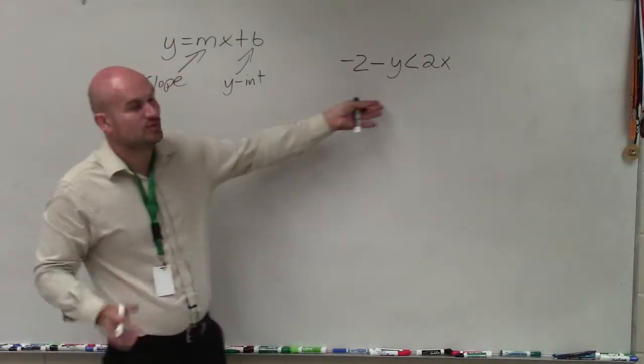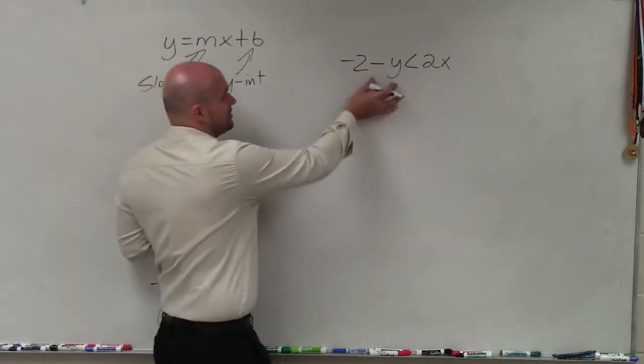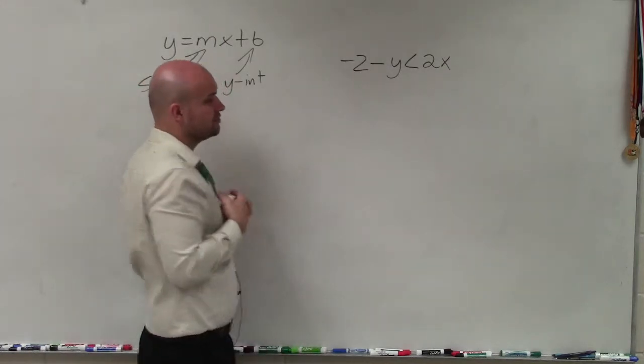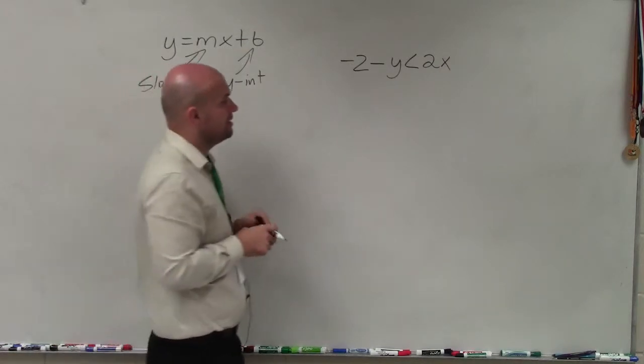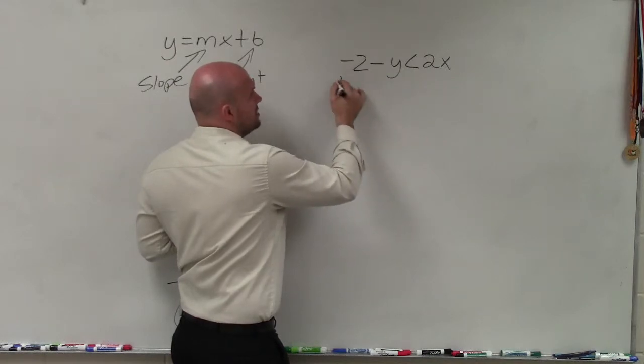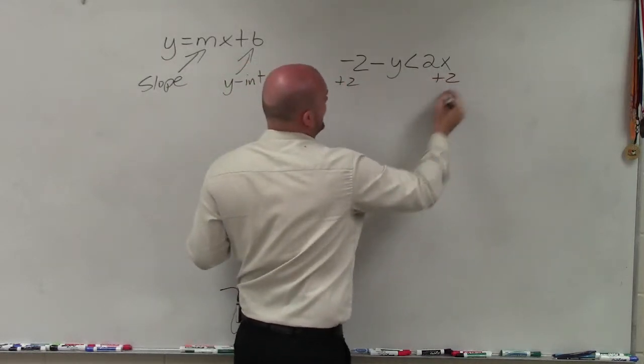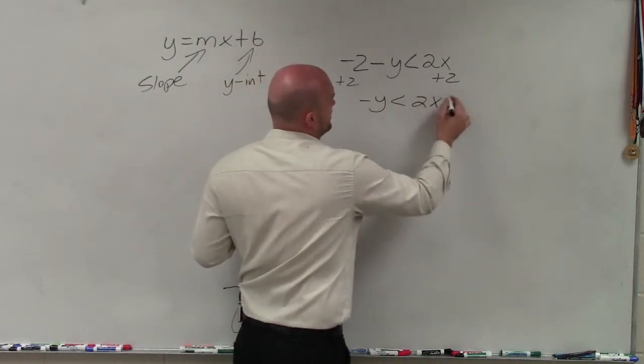So the first thing we want to do is write this where our y is isolated so we can identify the slope and the y-intercept. So what do I need to do to solve for my y? Well, to solve for my y, I need to undo my operation. So I can see my y is being subtracted by 2. To undo subtracting by 2, I'm going to add 2 to both sides. Therefore, I have negative y is less than 2x plus 2.